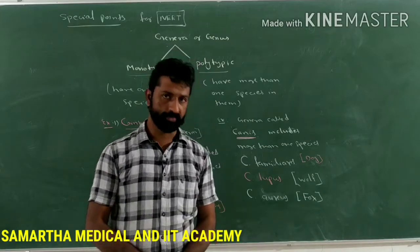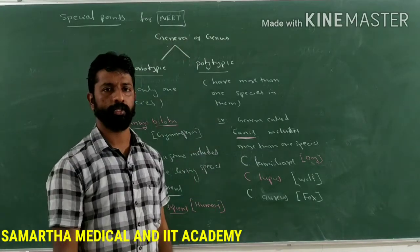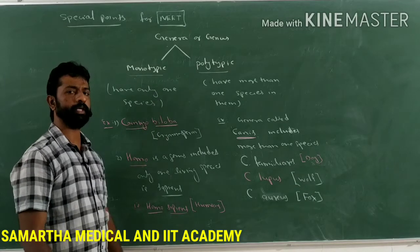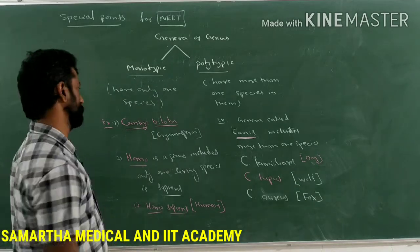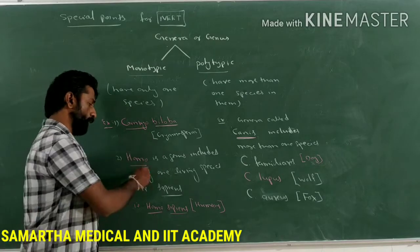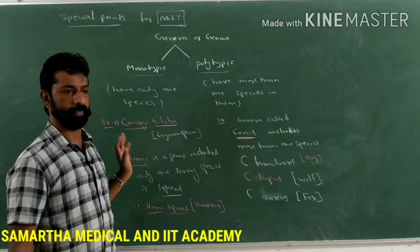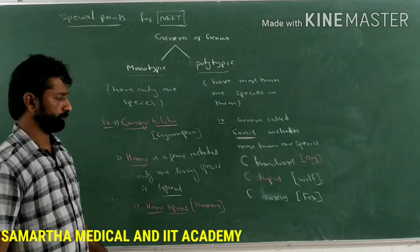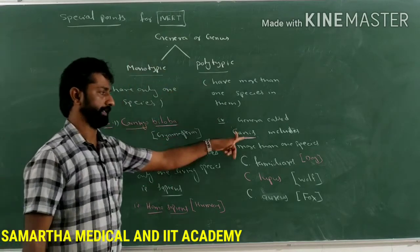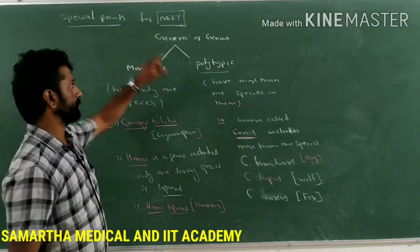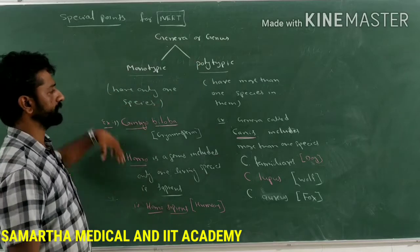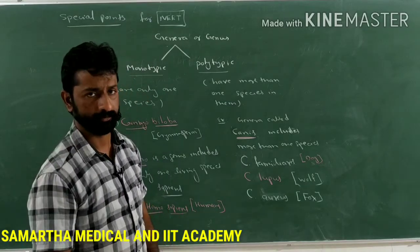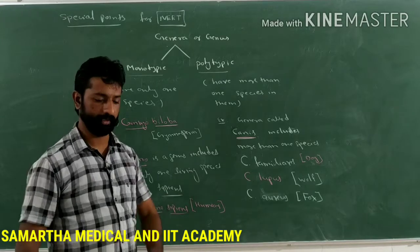So in summary, genera are of two types: monotypic and polytypic. Monotypic means the genus includes only one living species — examples are Ginkgo (with only biloba) and Homo (with only sapiens). Canis is the example of polytypic genera. Remember, this discussion is important for the NEET examination.